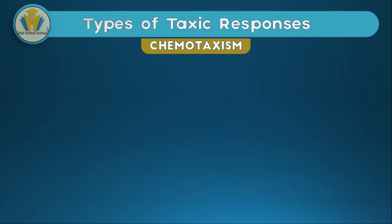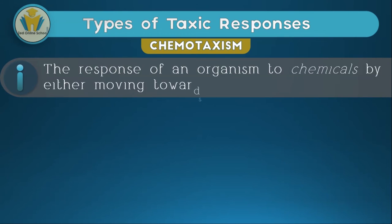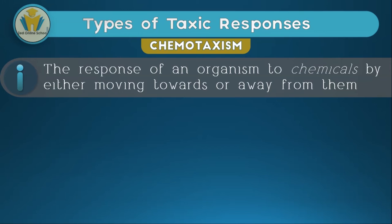Another type is chemotaxism — the response of an organism to chemicals by either moving towards or away from them. For example, if you work on a farm and don't want insects getting to your crops, you spray some chemicals. After spraying, very few insects — sometimes none — will attack your crops. That's an example of negative chemotaxism. In our bodies, when we talk about the clotting process, platelets produce chemicals in the blood that cause more platelets to come to a place of injury — that is an example of positive chemotaxism.